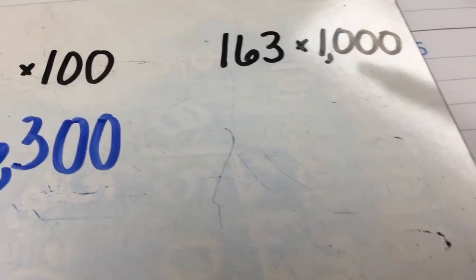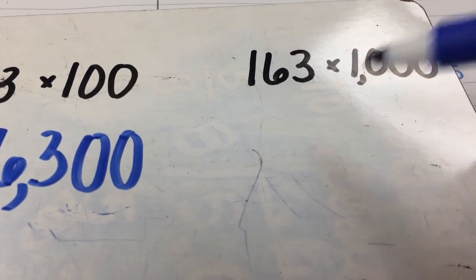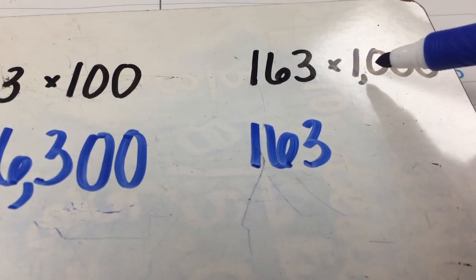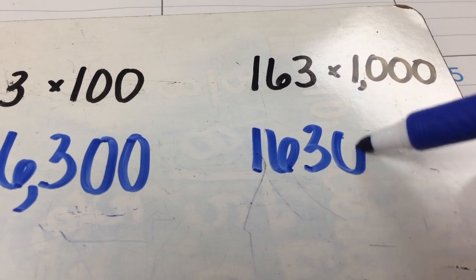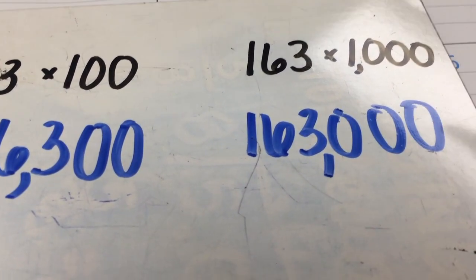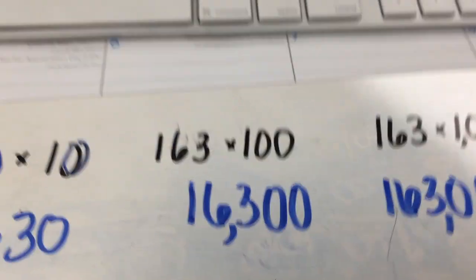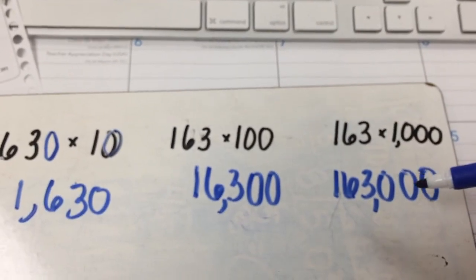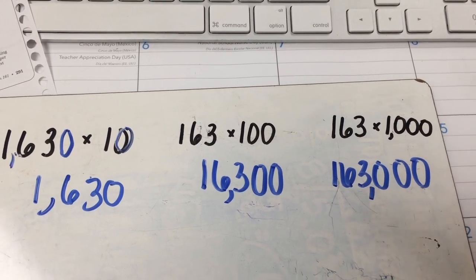And the 1,000 is just the same thing. 163 times 1 is 163, and then you add these three zeros that are on 1,000, and you just put the commas in place. If you don't believe me, you can take the time to do long division, but really this is just a shortcut for multiplying by 10, 100, and 1,000.